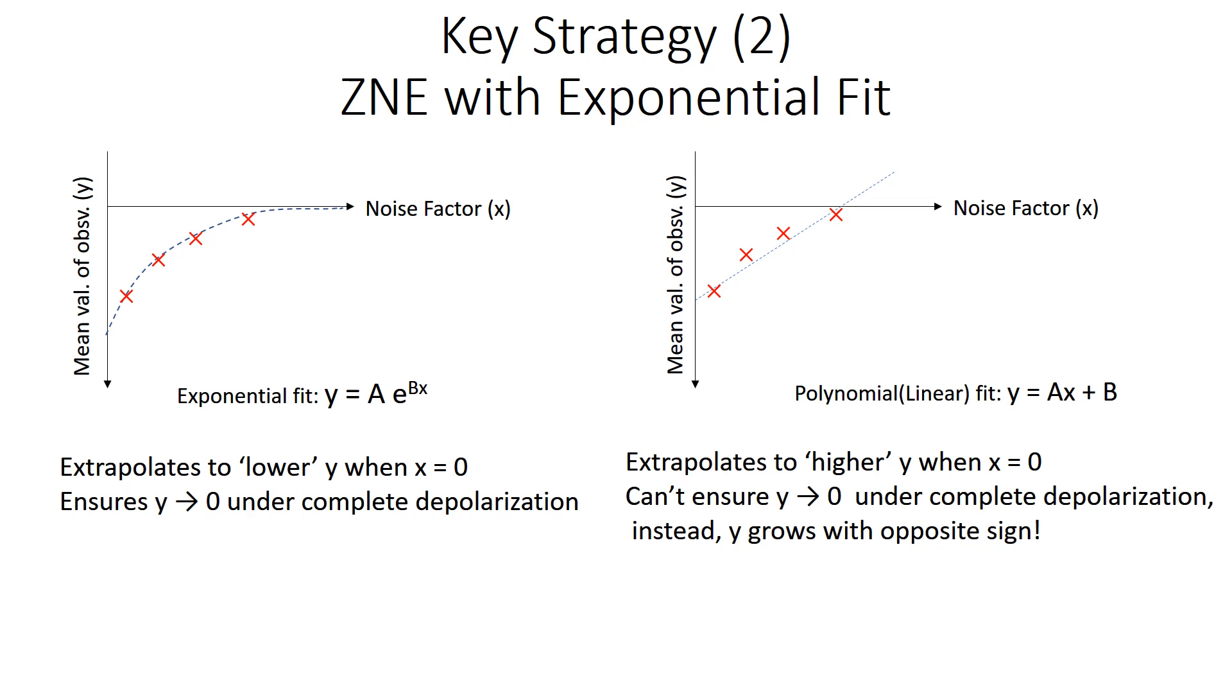This is in contrast with the case of polynomial fit, as shown here as a linear curve fit function, which tend to extrapolate Y to a higher value. In this case, it doesn't really ensure that Y approaches zero under complete depolarization. Instead, what we see here is that Y may grow with the opposite sign. And I should point out that the exponential fit was really critical to further lower the ground state energy closer to the correct value.